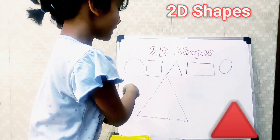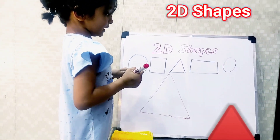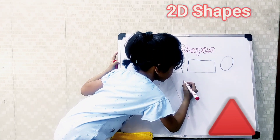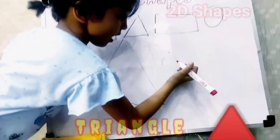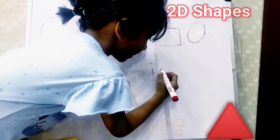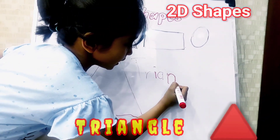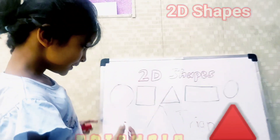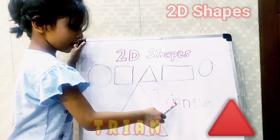So it has 3 corners: 1, 2, 3. And the spelling is T-R-I-A-N-G-L-E — Triangle! And there are 3 corners.